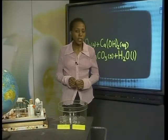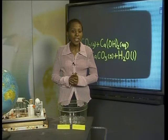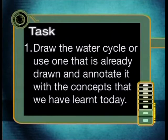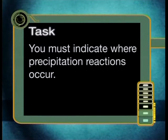Because some sea organisms use this calcium carbonate to make shells, carbon dioxide is cleverly removed from the water, which prevents carbon dioxide levels from increasing in the environment. For your task today, draw the water cycle — or use one already drawn — and annotate it with the concepts we have learnt today. Show where water acts as a solvent and why it is important, and indicate where precipitation reactions occur. Keep your diagram safe until after the next lesson, where you will be able to add more annotations. In the next lesson we are going to discuss how the movement of energy into and out of water regulates the earth's climates so that life can exist.